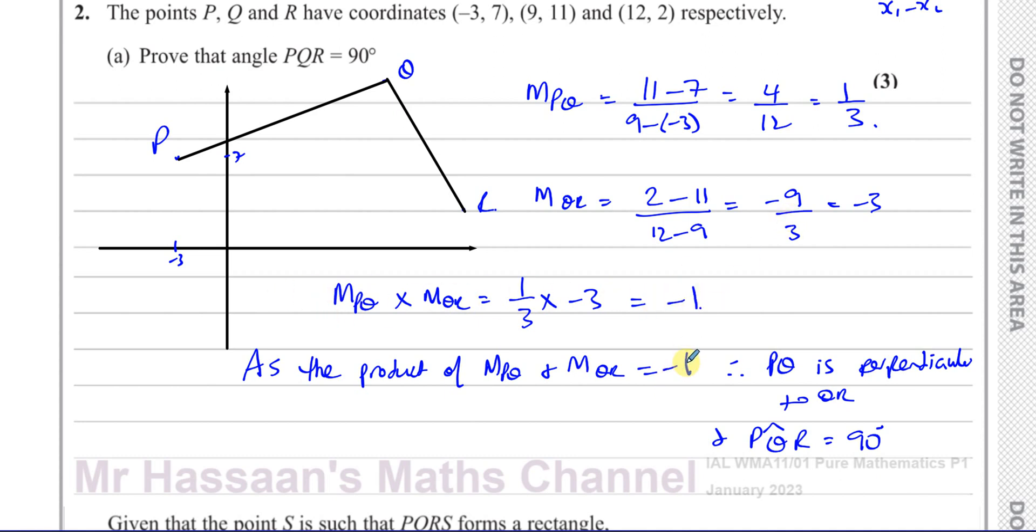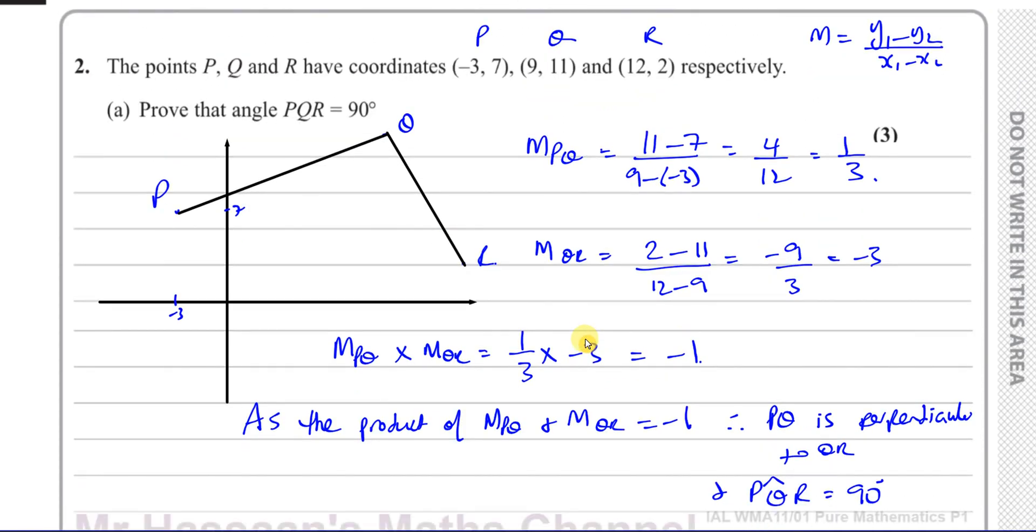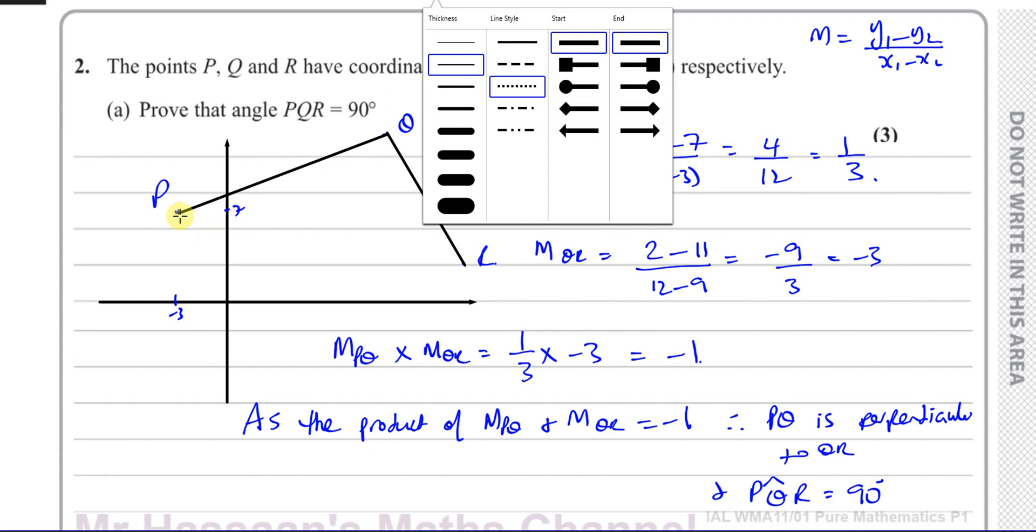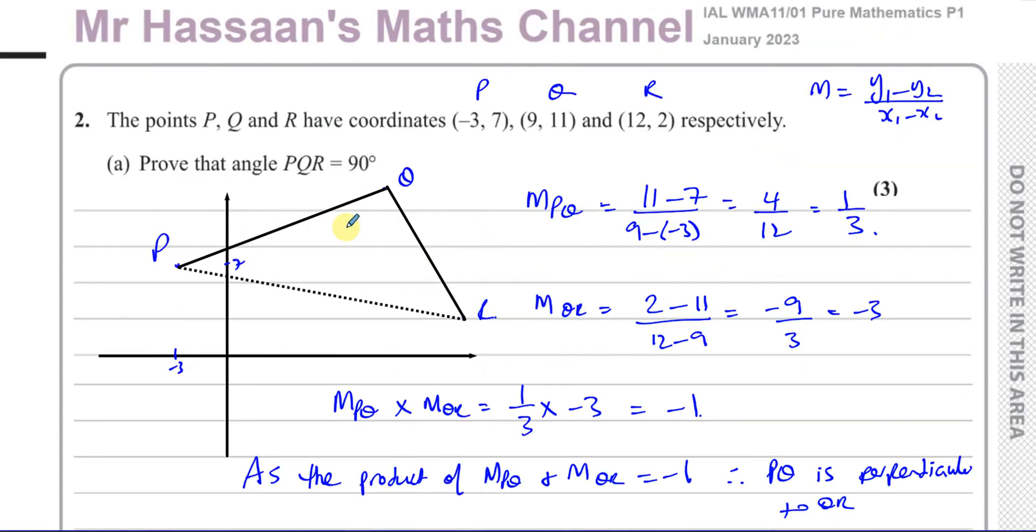That's probably the simplest way of proving that angle is 90 degrees. We could also do it another way by using the length formula. I could find the length of PQ and the length of QR and the length of PR. Then I can prove that they satisfy Pythagoras' theorem, that when I take PQ and square it and QR and square it, they add up to PR squared.